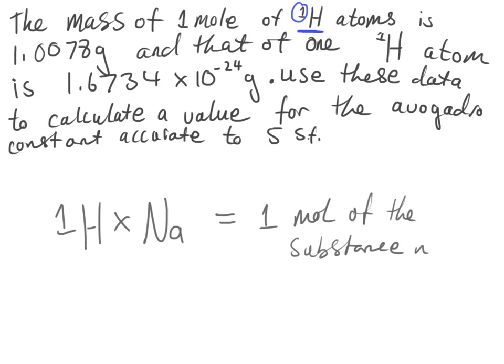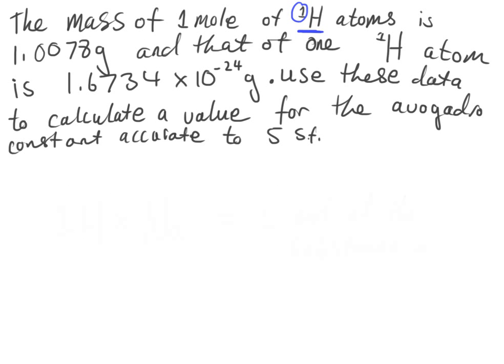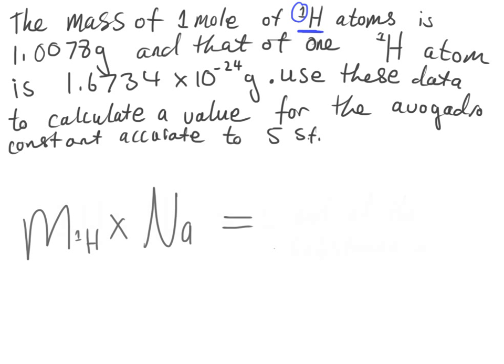Now if we take this idea and relate it to mass, we can say that if we were to multiply the mass of one ¹H atom by the Avogadro constant, what we would get is the mass of one mole of ¹H atoms. Here N represents the symbol for moles, so this is the mass of one mole of the substance — the ¹H isotope — and all values would be in grams.